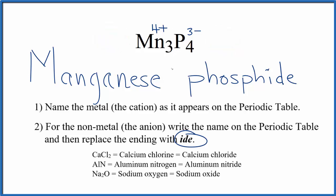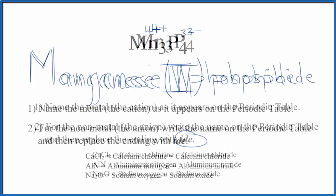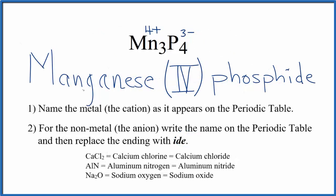And we'd write this four as a Roman numeral right here in the name, put parentheses. So the name for Mn₃P₄ is manganese(IV) phosphide.